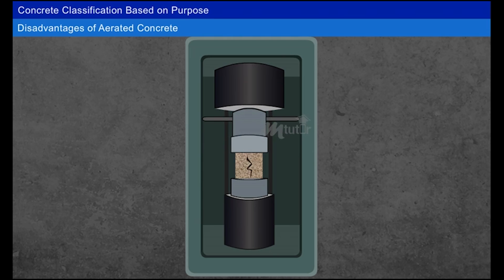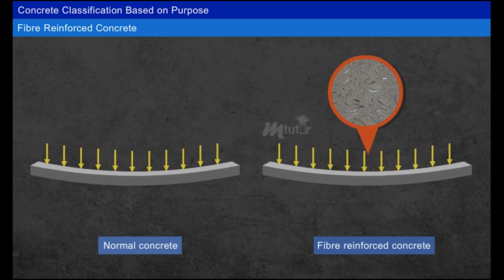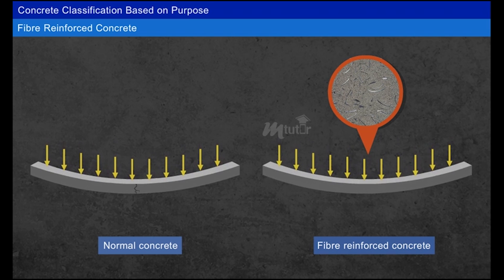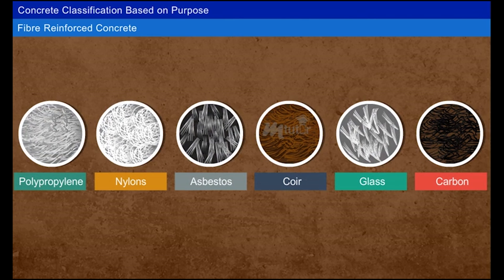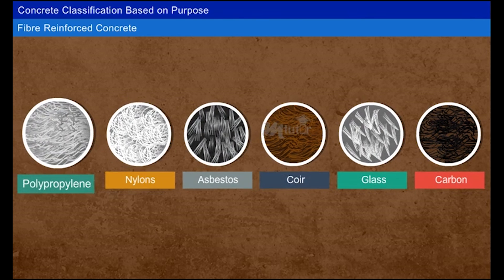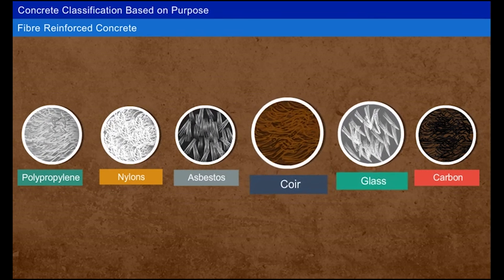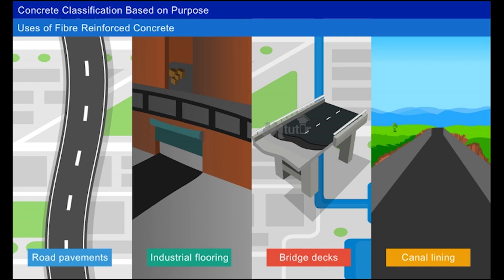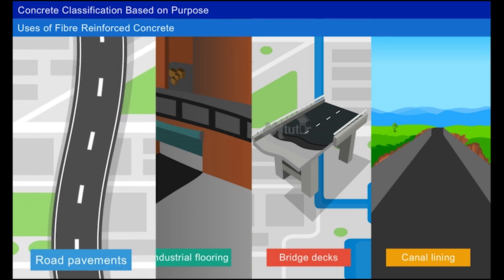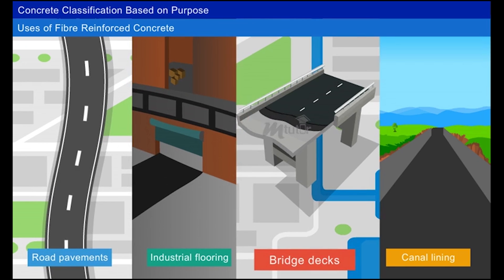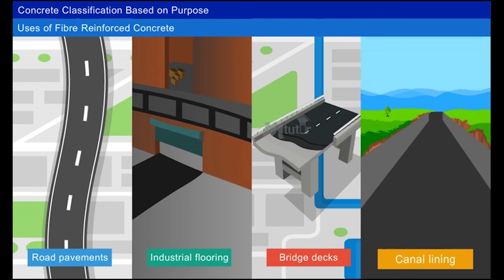The tensile strength of normal concrete is very low and it develops cracks in structural elements. To avoid this, fibers are added to normal concrete, creating fiber reinforced concrete. Many types of fibers are used, including steel fibers, polypropylene, nylon, asbestos, coir, glass, and carbon. Fiber reinforced concrete is used for road pavements, industrial flooring, bridge decks, canal lining, and precast concrete members such as pipes, beams, and staircase steps.